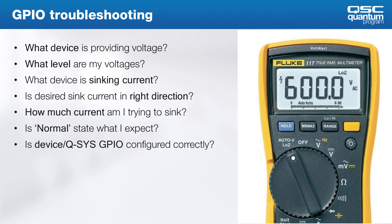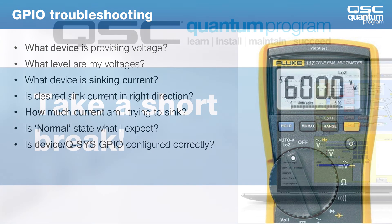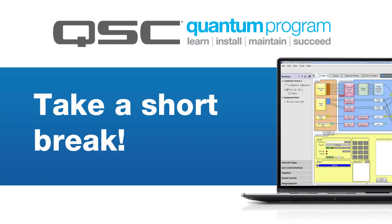What often happens with GPIO applications is the signal flow is created by one person, the wiring is done by another person, and then the programmer comes in and sends the device file with all the logic. If things don't work immediately, the programmer starts rearranging logic blocks and signal flow rather than troubleshooting systematically from the beginning to see what Q-SYS sees when you push the button. Okay, GPIO was a big one. Let's break right there, and when we get back we'll look at Q-SYS Ethernet Control.